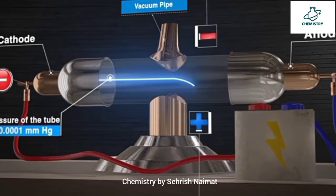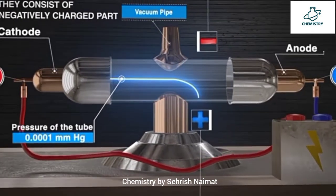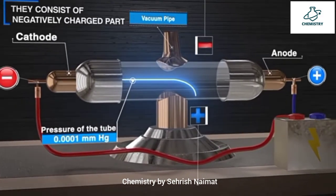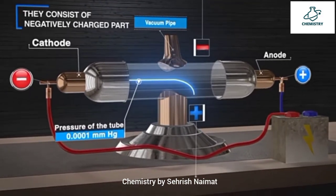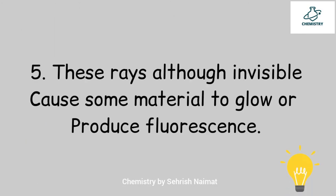They are deflected towards the positive plate in an electric field, showing that they are negatively charged particles. The charge-to-mass ratio (e/m) of cathode particles is 1.7588 × 10⁸ coulombs per gram, and it is the same for all electrons regardless of the gas used in the tube.